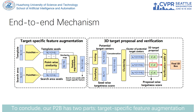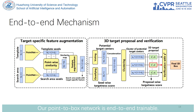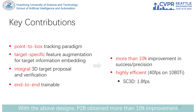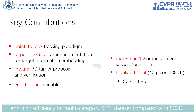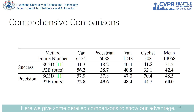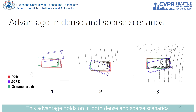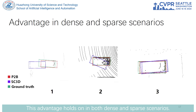To conclude, our P2B has two parts: target-specific feature augmentation, and 3D target proposal and verification. Our point-to-box network is end-to-end trainable. With these designs, P2B attains more than 10% improvement and high efficiency on the multi-category KITTI dataset compared with SC3D. Detailed comparisons show this advantage holds in both dense and sparse scenarios.